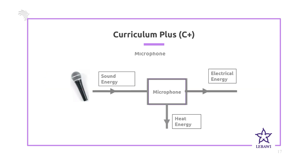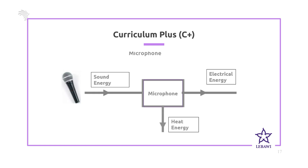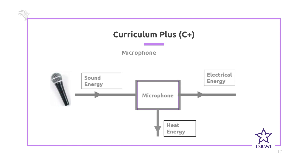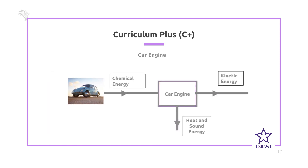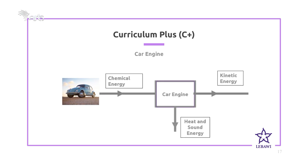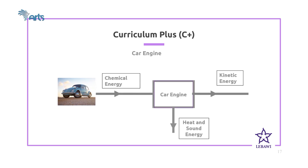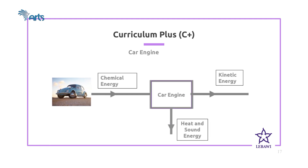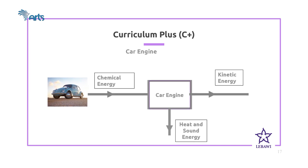Another example is a microphone, which absorbs sound energy and converts it into electrical energy and heat energy. And for a car engine — a car takes in chemical energy and converts it into kinetic energy, but while in motion there is friction, so energy is also changed into heat and sound energy. That heat and sound energy is the unwanted form, while kinetic energy is the useful output energy.